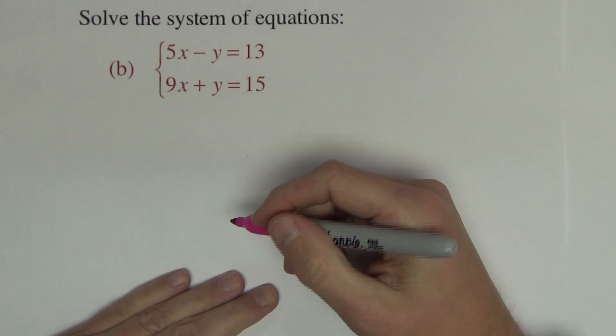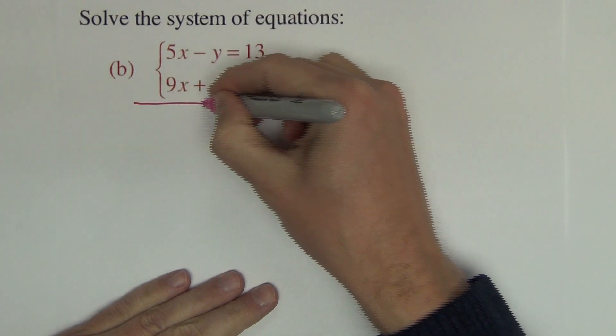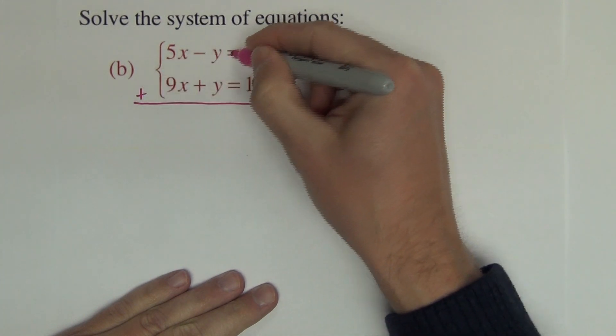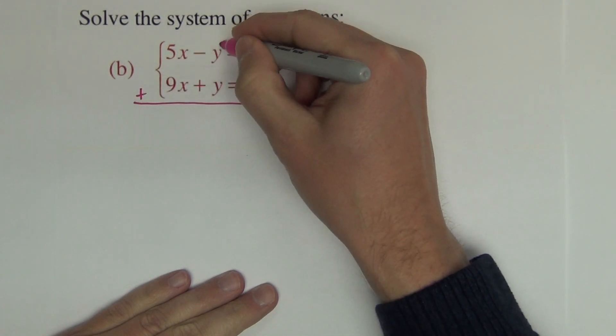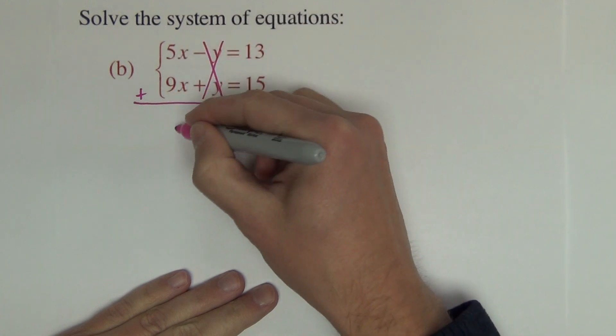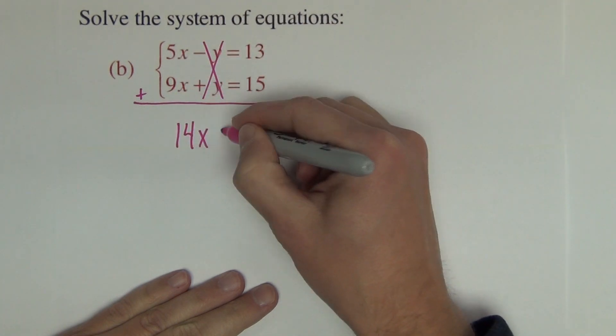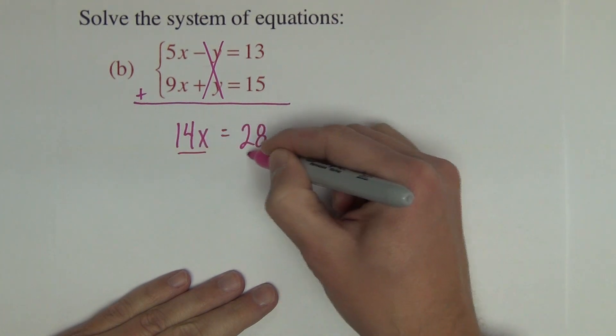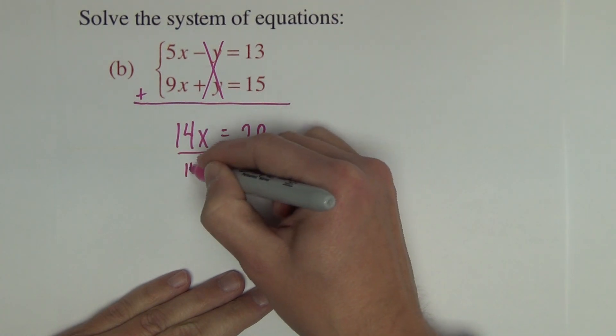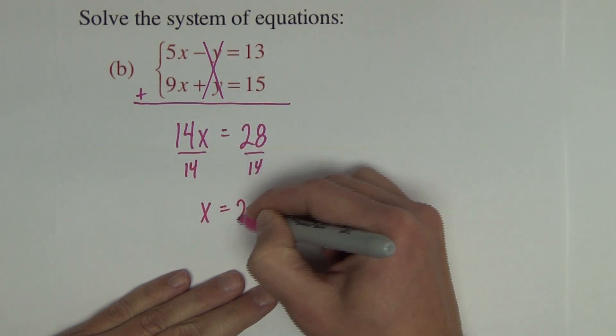Alright, the next system is most certainly set up for elimination. As right away, if we were to add these two equations together, the negative y and the positive y cancel out. We end up with 14x equals 28. Divide by 14, we get x equals 2.